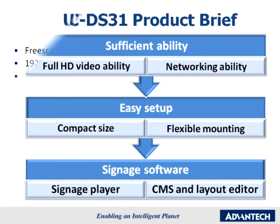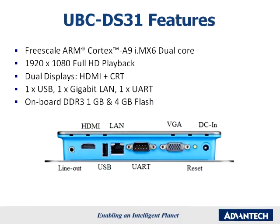Here are the UBC-DS-31 feature highlights. It is powered by a dual-core Freescale ARM Cortex-A9 iMX-6. It supports 1920x1080 Full HD playback. It supports dual displays, HDMI, and CRT. It has one USB, one Gigabit LAN, and one UART built-in. It has DDR3, one Gigabit RAM, and four Gigabit flash on board.